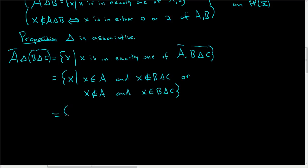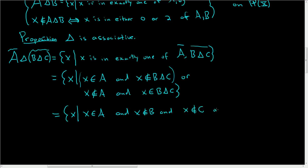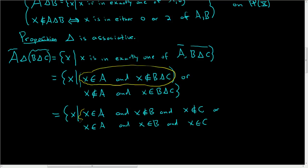Let's keep going. Let's take care of the first line here. What does it mean to not be in the symmetric difference of B and C? It means it's in none or it's in both. The case where it's in none: X is not in B and X is not in C. Or X is in A and this time the case where it's in both: X is in B and X is in C. So everything we've written down so far rewrites just this first case — X in A and not in (B△C) — into all of this.